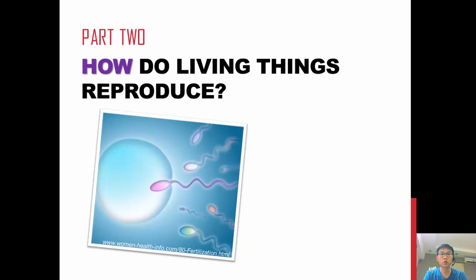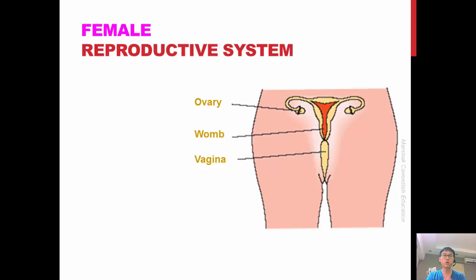To answer that question, we need to learn about the parts and function of the male and female reproductive system. Let's first talk about the female reproductive system. Here we have a diagram of the organs that make up the female reproductive system, and for the purpose of our lesson, we are only going to focus on three parts.